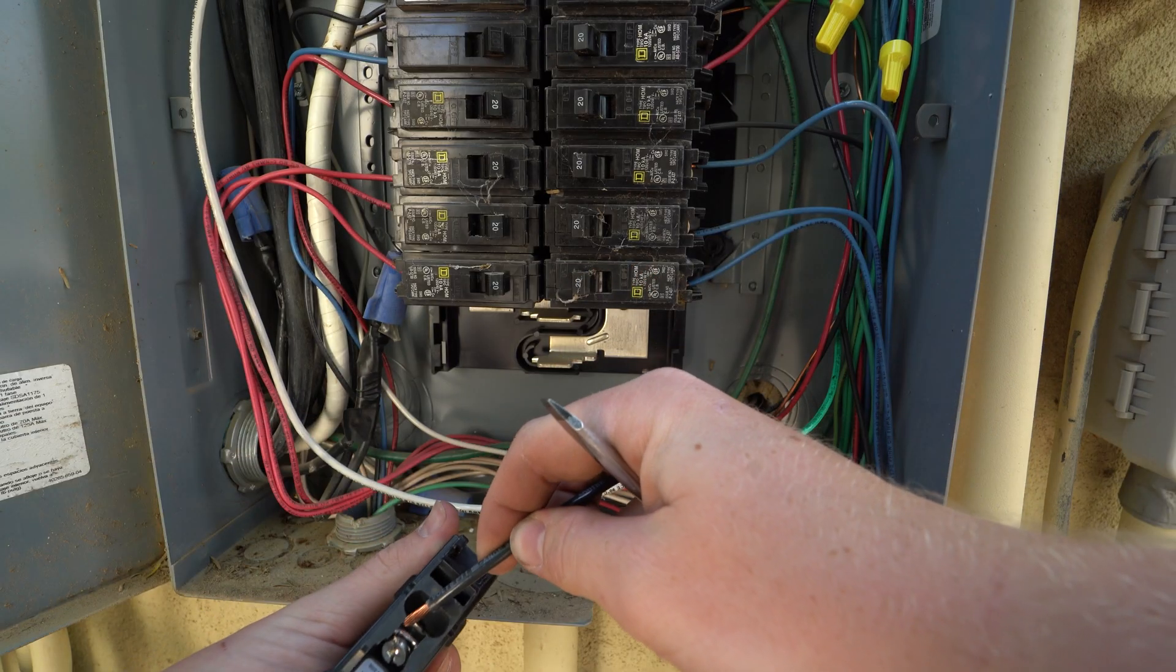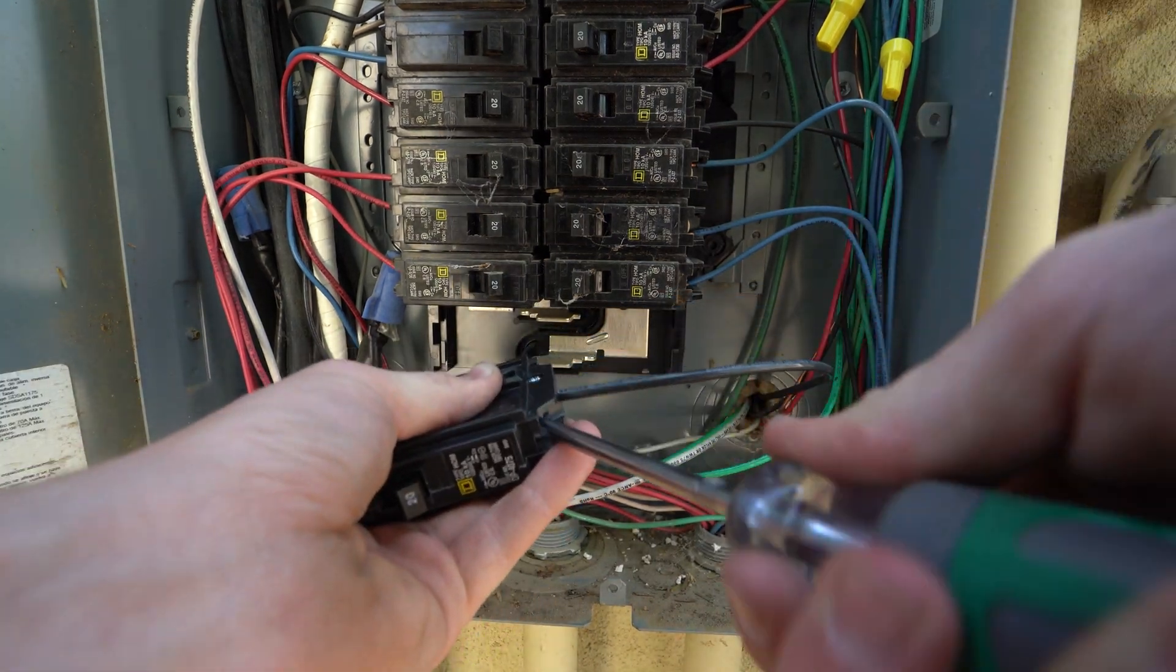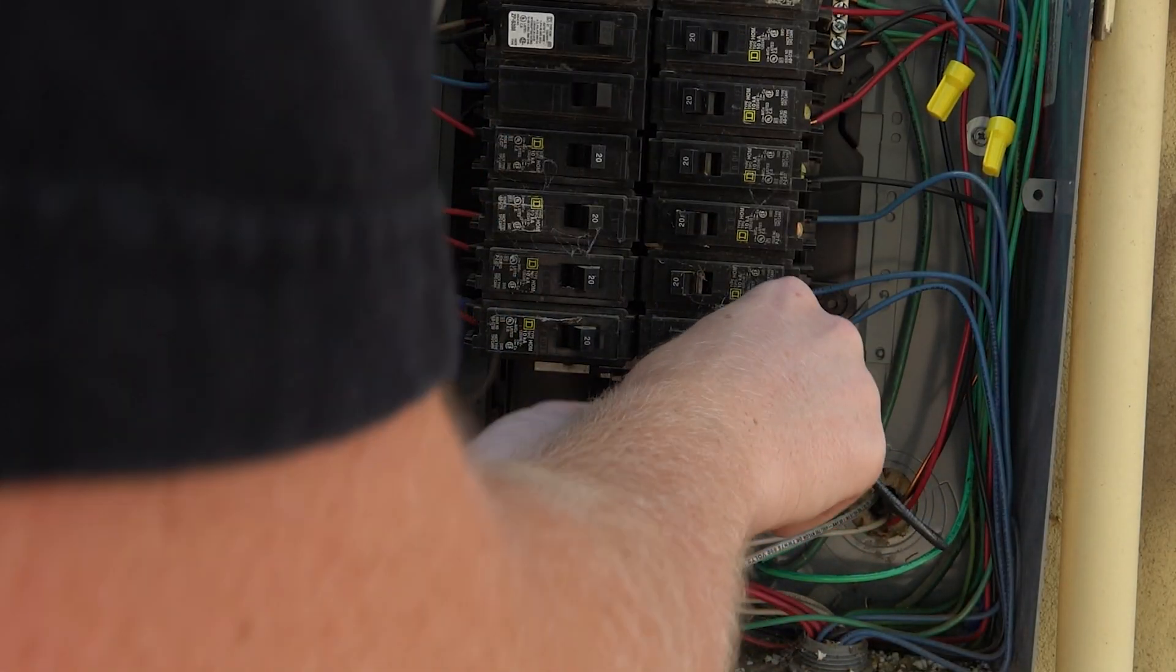Strip the black wire and insert it into the breaker. Make sure the screw holding in the hot wire is tight. Now position the teeth and snap in the new breaker.